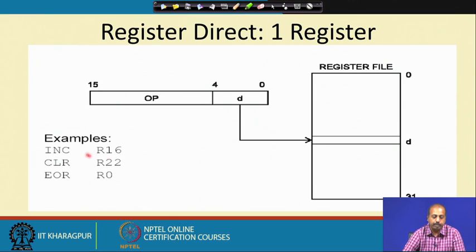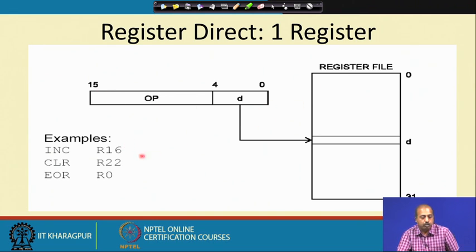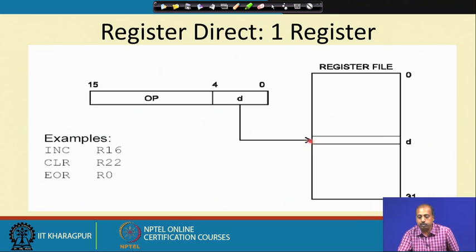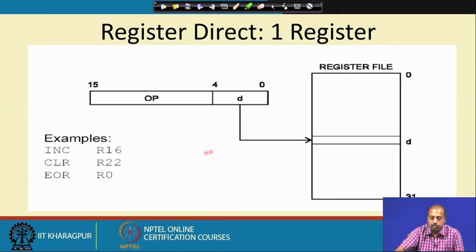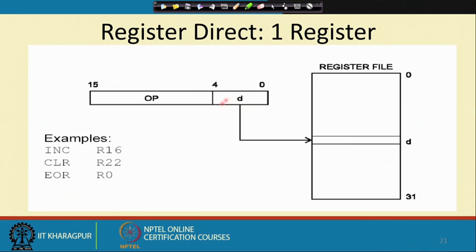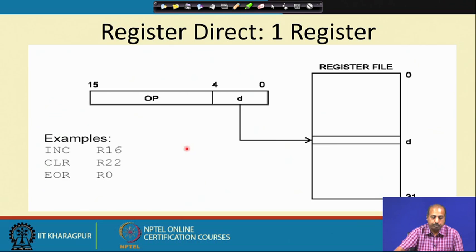This instruction will increment the R16 register — it is a 16-bit instruction. In the register file, R16 is given the corresponding index D. The opcode part will be there and then these 4 bits will identify the register on which you want to do the operation. For the first instruction D will be 16, for the second D will be 22, and for the third D will be 0. A 4-bit coding is sufficient to differentiate between the 16 different registers.